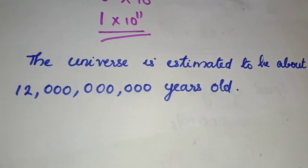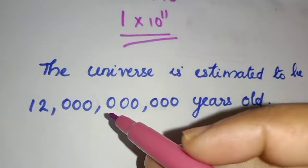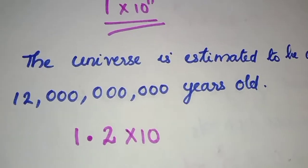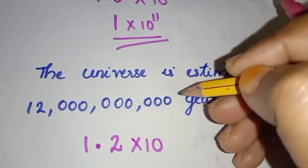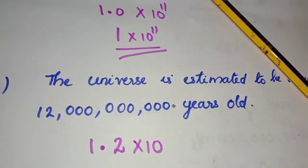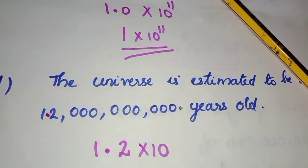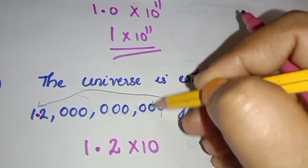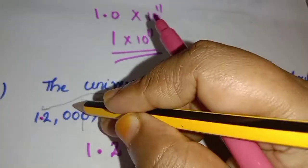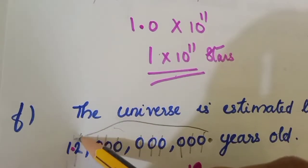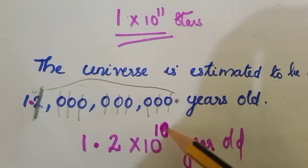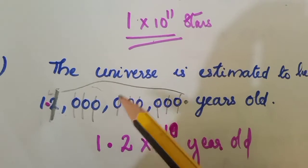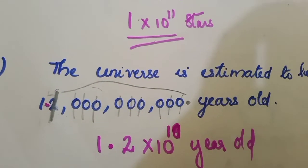The universe is estimated to be about 10,000,000,000 years old. We place the decimal after the first digit and count how many places we shift. We write 1.0 to the power — counting: 1, 2, 3, 4, 5, 6, 7, 8, 9, 10. So the answer is 1.0 × 10^10. Okay, clear?